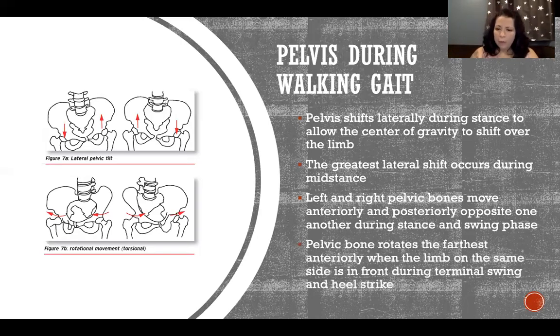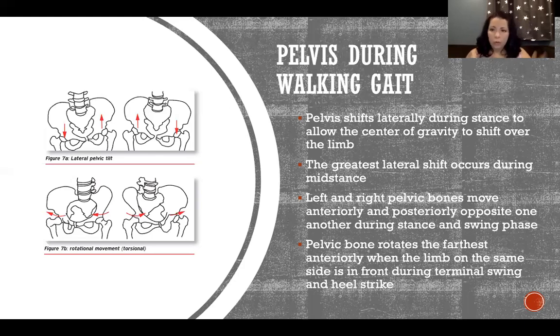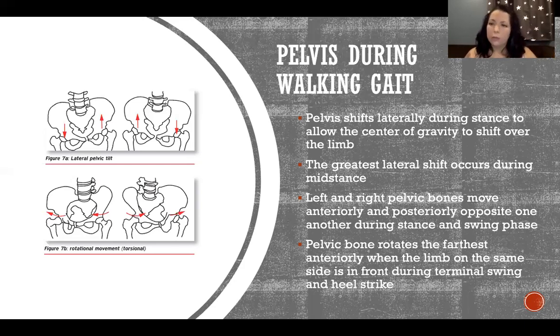The pelvic bone rotates the farthest anteriorly when the limb on that same side is in front — during terminal swing and heel strike. That is when the pelvis on that side will be both the most anterior and the most inferior. That's all for this video, and I'll see you for the next one.